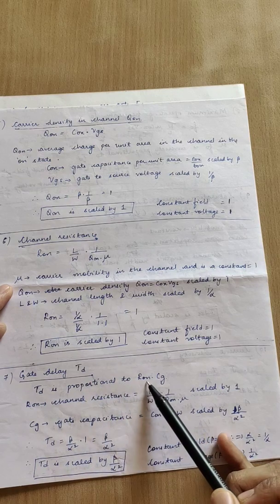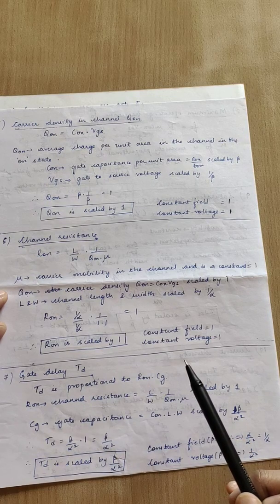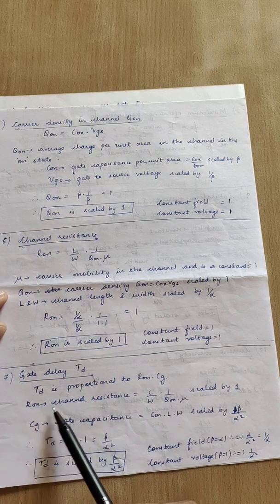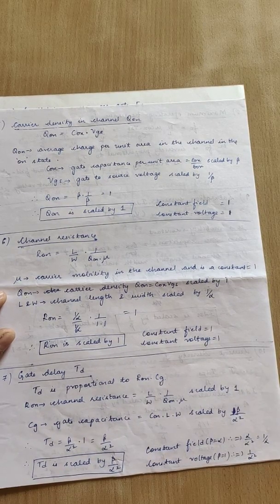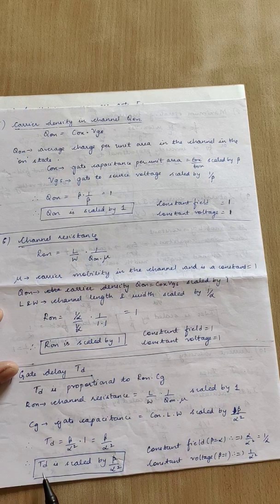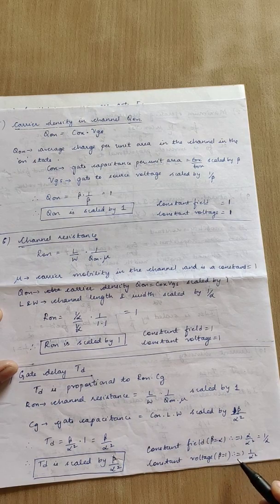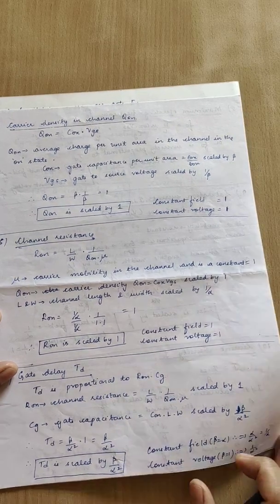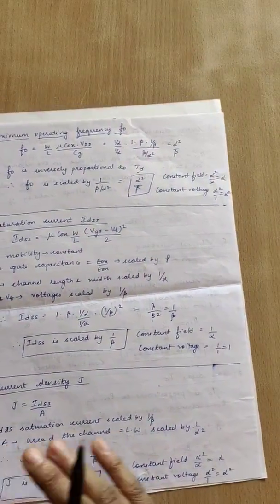Next: gate delay t_d, which is proportional to R_on × C_g, since delay is an RC time constant. R_on is scaled by 1 (just derived) and C_g is scaled by β/α² (previously derived). Substituting: t_d scales as 1 × β/α² = β/α². Since β is present, for Constant Electric Field substitute β = α to get α/α² = 1/α, and for Constant Voltage substitute β = 1 to get 1/α².